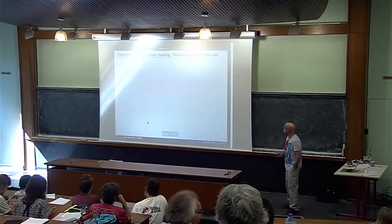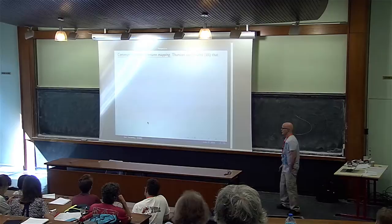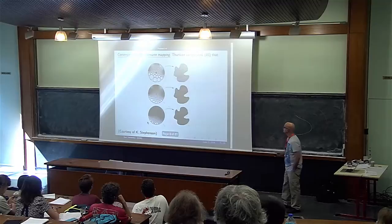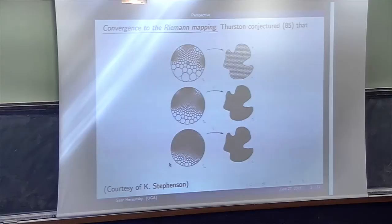Here is one classical example. It has to do with the convergence of the Riemann mapping, and it took the ingenuity of Thurston in 1985 to even conjecture that. I'm not going to go to a bigger picture, but if people want to see a more detailed picture, you can come and see later.